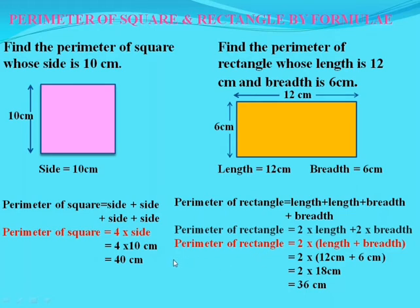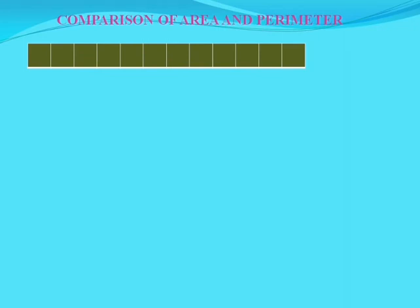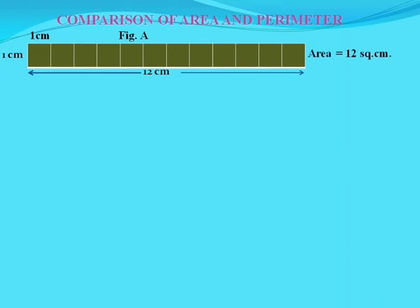Children, memorize these formulas to find the perimeters of square and rectangle. Now, let's take another topic: comparison of area and perimeter. Here, 12 squares are joined together to make a rectangle — this is figure A. Each square has a side of 1 cm. Its length is 12 cm and its breadth is 1 cm, so its area is 12 square cm and its perimeter is 12 + 12 + 1 + 1 = 26 cm.